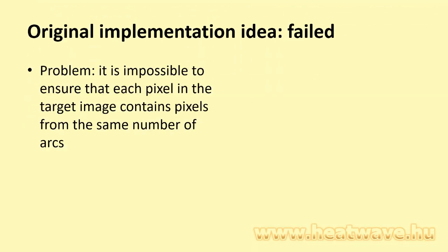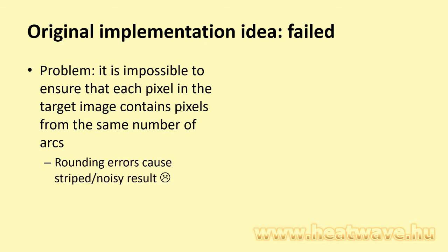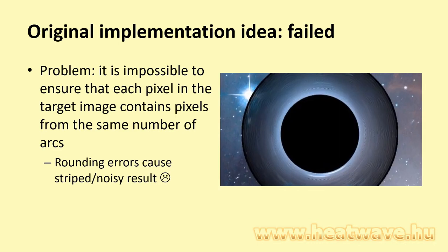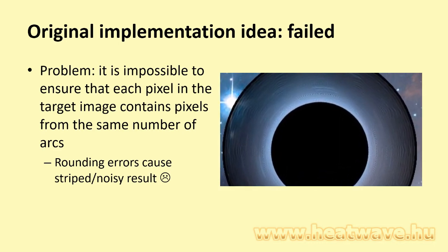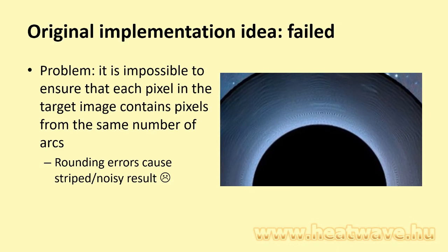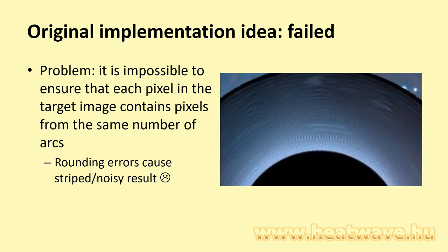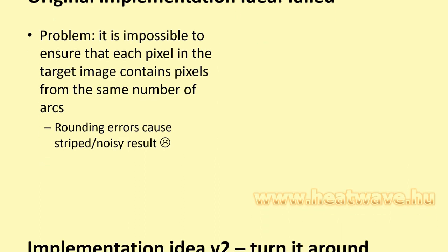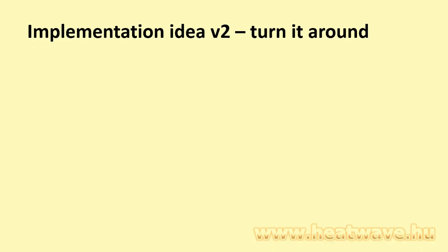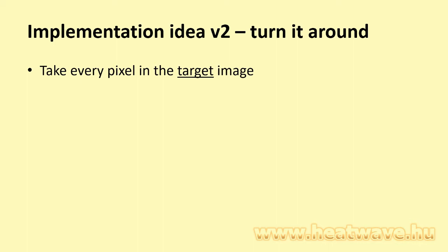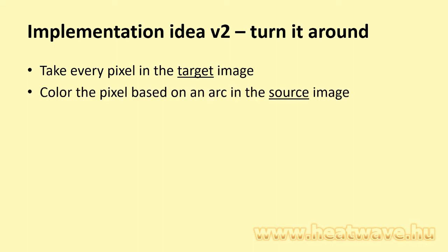As usual, the first attempt failed miserably. Due to rounding errors when converting to integers, I could neither ensure that each pixel in the target image is influenced by the same number of pixels in the source image, nor that it is colored at all. The result looks terrible. I decided to turn the whole thing around and go through the target image pixels instead. Inverting the smear effect is not obvious. What I did has nothing to do with it in the mathematical sense, but I wanted to fake it, not make it.